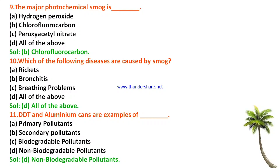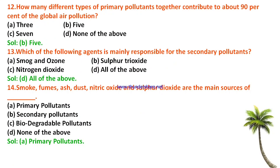Which diseases are caused by smog — rickets, bronchitis, breathing problems, or all of the above? The answer is all of the above; smog causes rickets, bronchitis, and respiratory tract diseases. DDT and aluminium cans are examples of non-biodegradable pollutants. How many different types of primary pollutants together contribute to about 90% of global air pollution? The right answer is 5. Which agents are mainly responsible for secondary pollutants — smog and ozone, sulfur trioxide, nitrogen dioxide, or all of the above? The answer is all of the above.